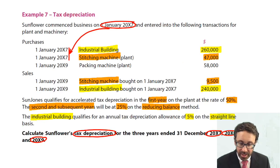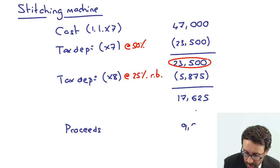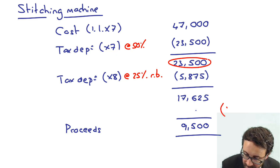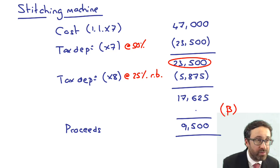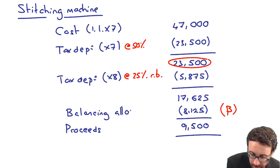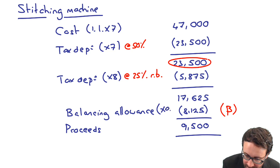What then happens in X9? We're then told that we sell it at the very start of X9 for $9,500. So I have my proceeds at $9,500. And then what I can do is I can put in a balancing figure. That balancing figure is effectively like a loss on disposal at $8,125, and that loss is what we are allowed as a deduction in our tax computations. That's a balancing allowance, isn't it? And that is the balancing allowance in X9.